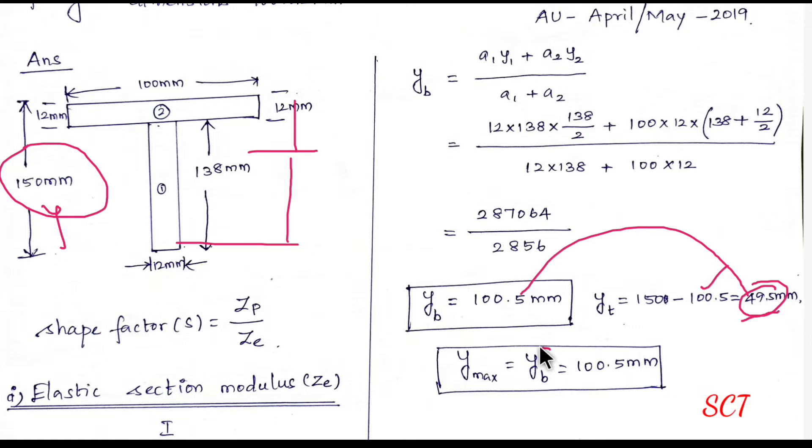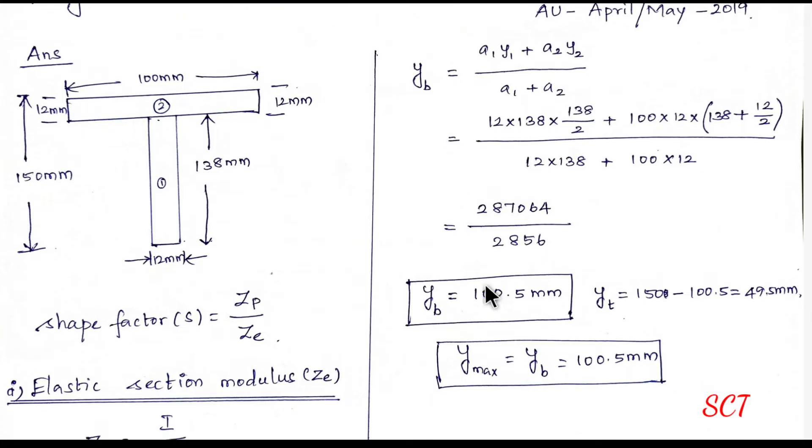So YMX means this is YMX. So YMX means YB means that value is 100.5 mm. So YMX means YMX. Next,